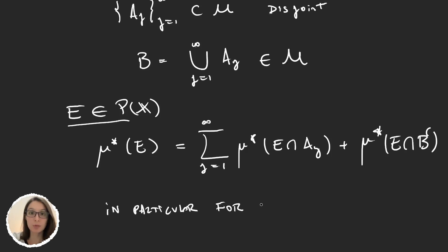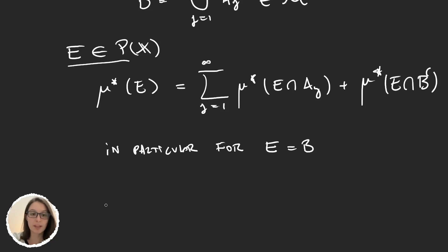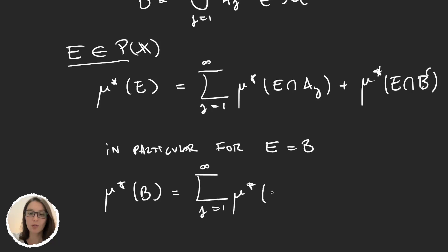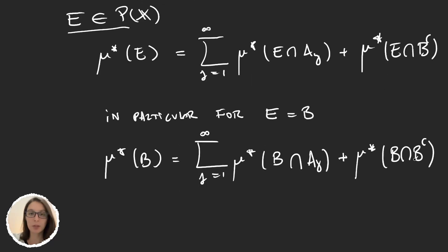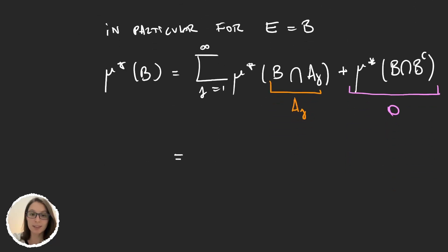In particular, this is valid for E = B. When we set E equal to B, we get μ*(B) equals the sum from j=1 to infinity of μ*(B ∩ A_j) plus μ*(B ∩ B complement). But B ∩ B complement is the empty set, so that last measure is zero. And B ∩ A_j equals A_j, since B is the union of the disjoint sets A_j. So we have the sum from j=1 to infinity of μ*(A_j) plus zero.